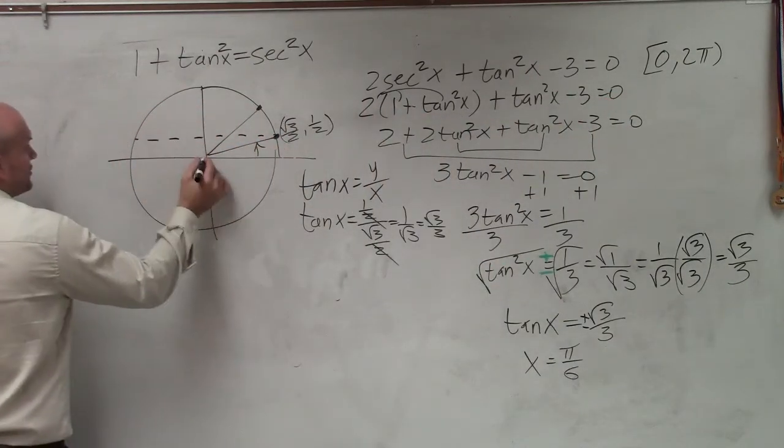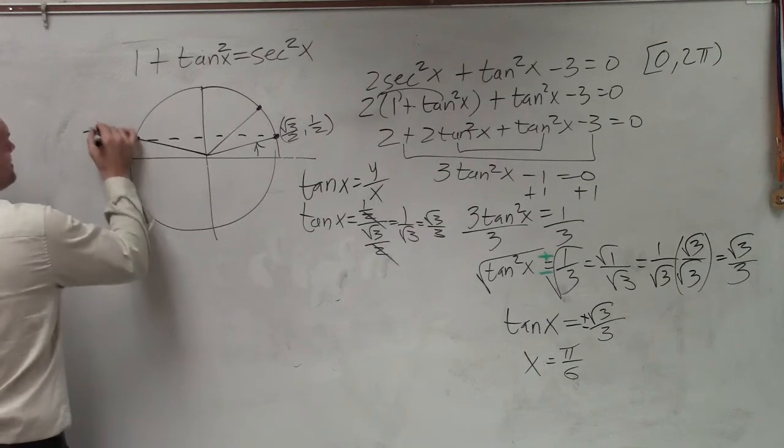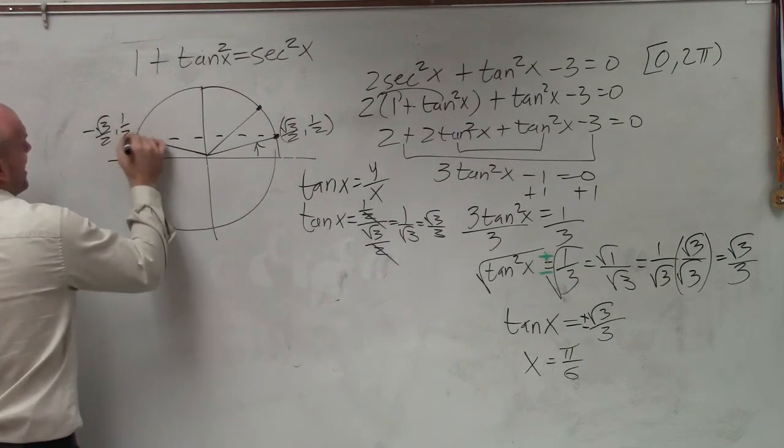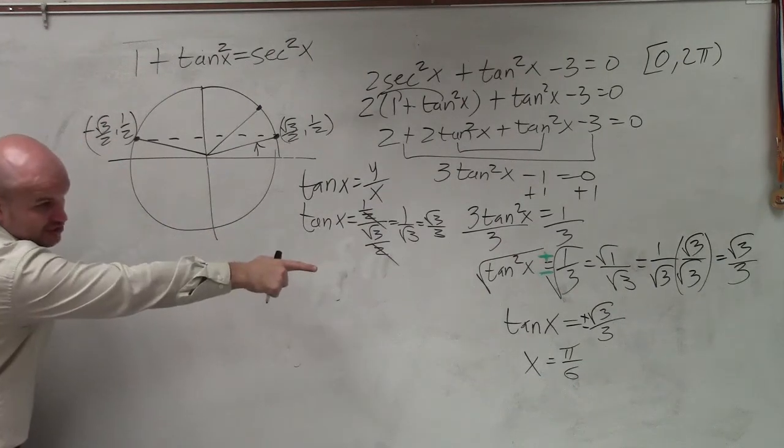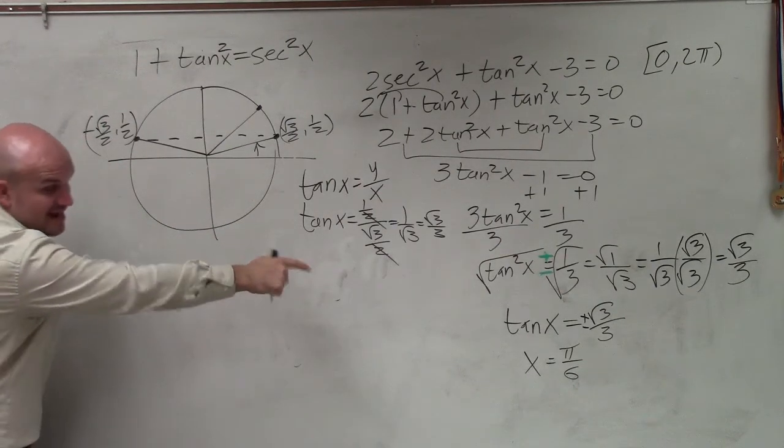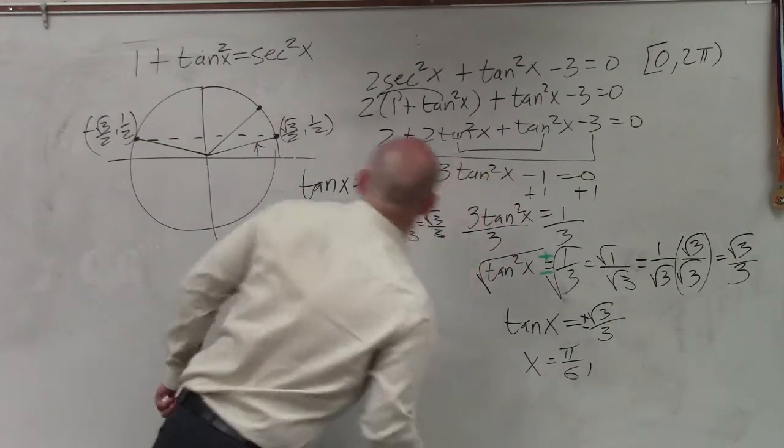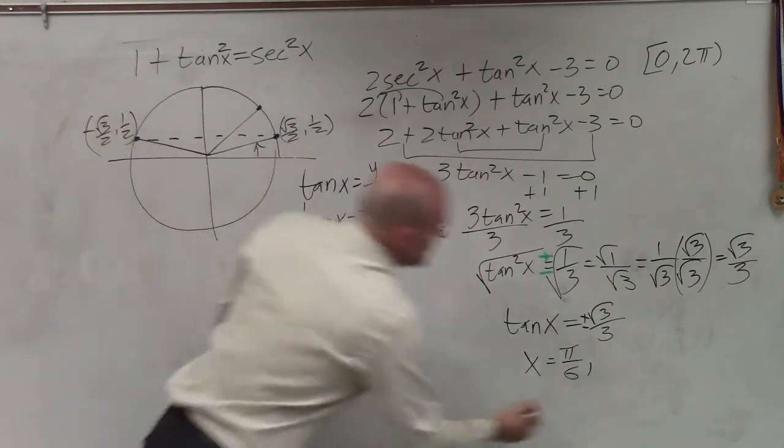So therefore, I look across the unit circle to this angle. This angle is -√3/2, 1/2. The ratio is going to be exactly the same, but it will be negative. And since I took the square root, I introduced the positive and the negative. So yes, that angle works as well, which is 5π/6.